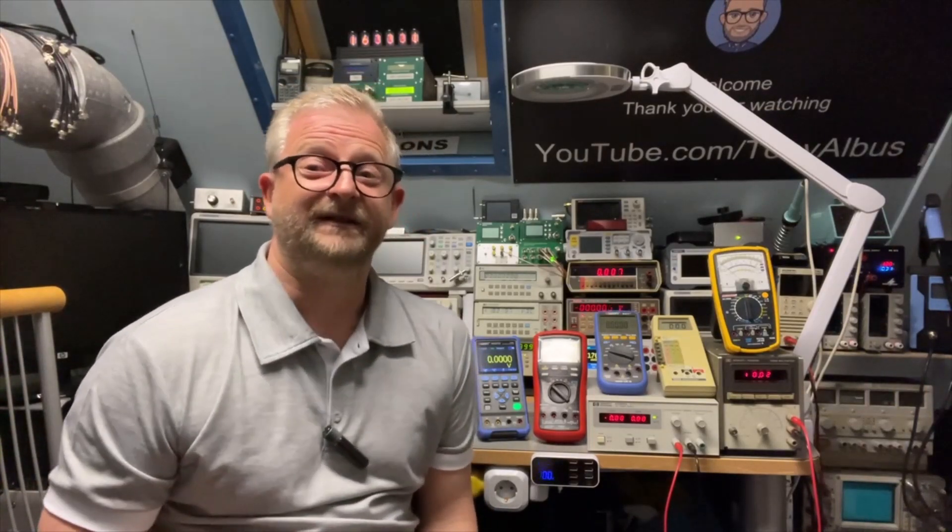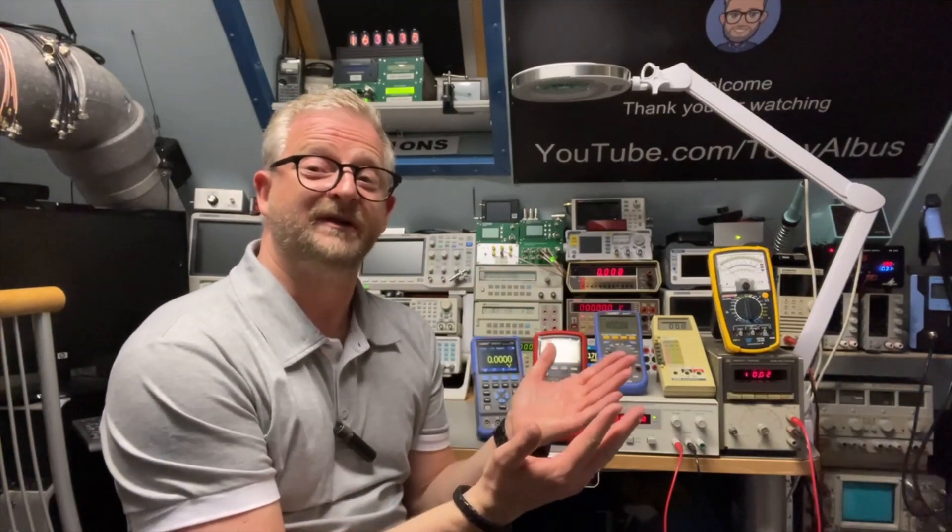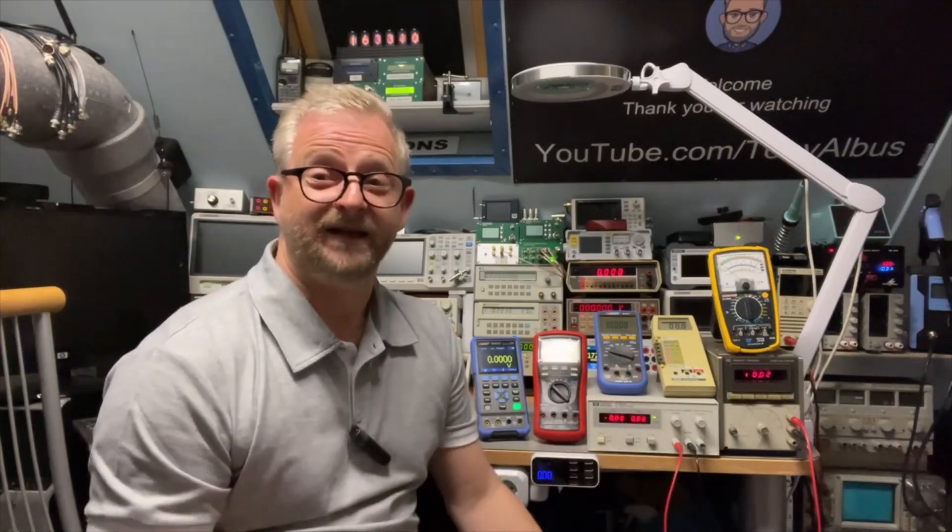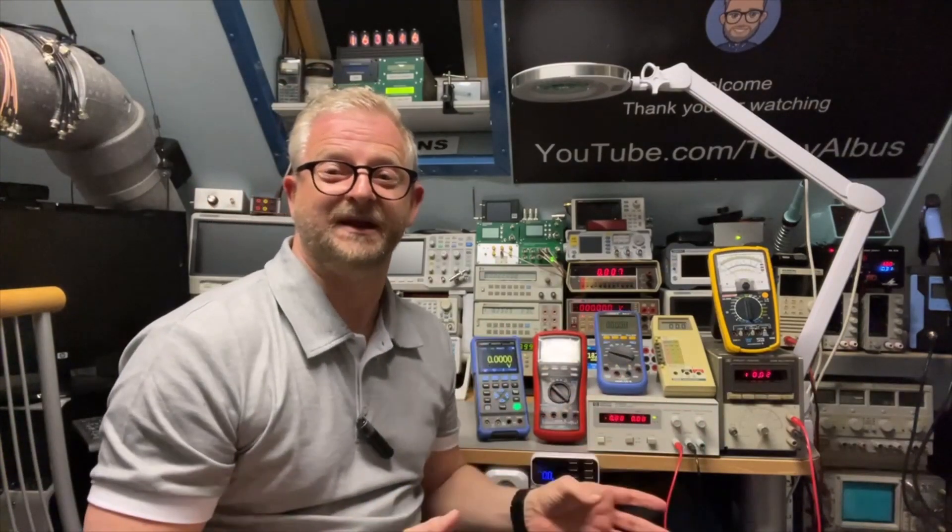And why the counts is also very important. If you have two multimeters, both four and a half digits, but one has more counts than the other, what does it mean? And what is the consequence if you pick the one with the lower count or the higher count? So what does it actually mean?